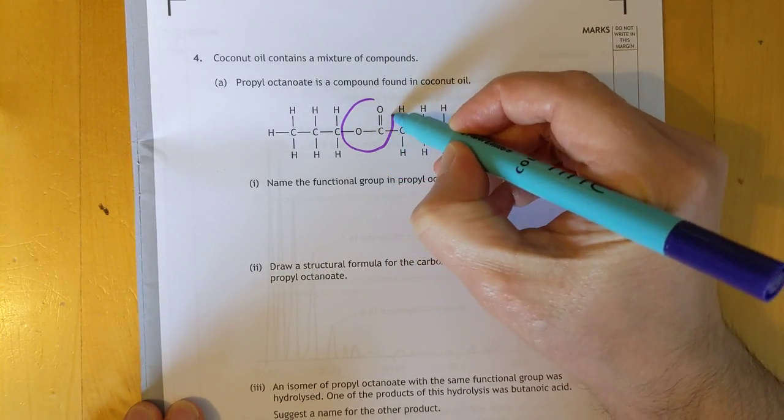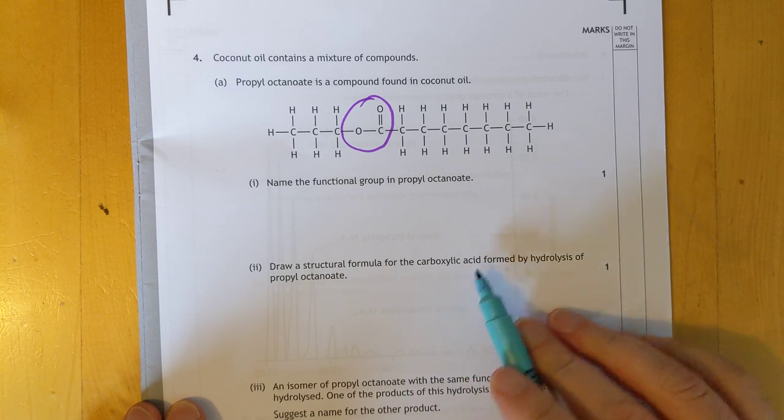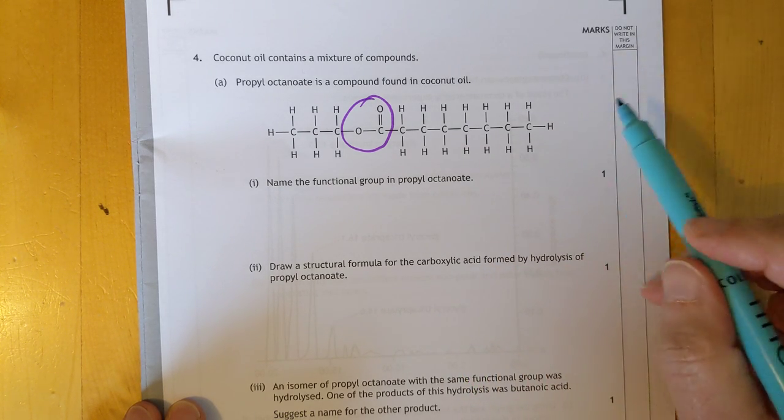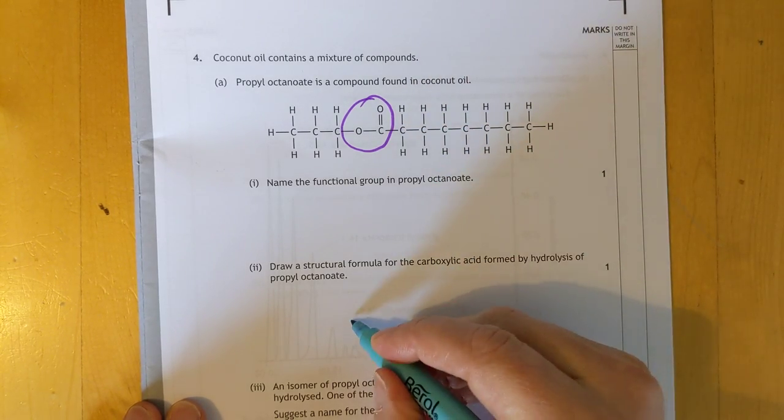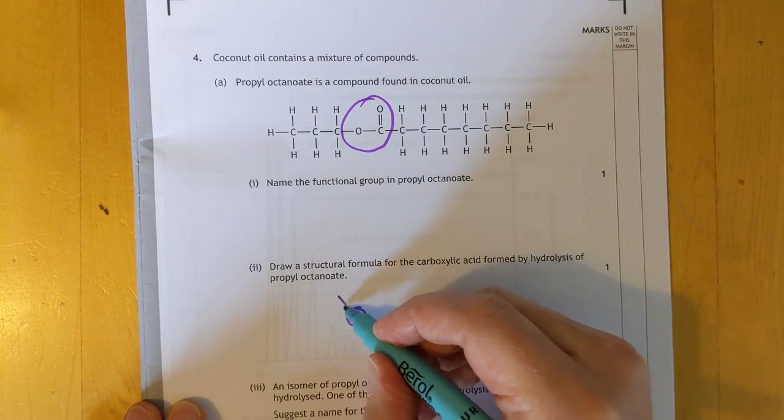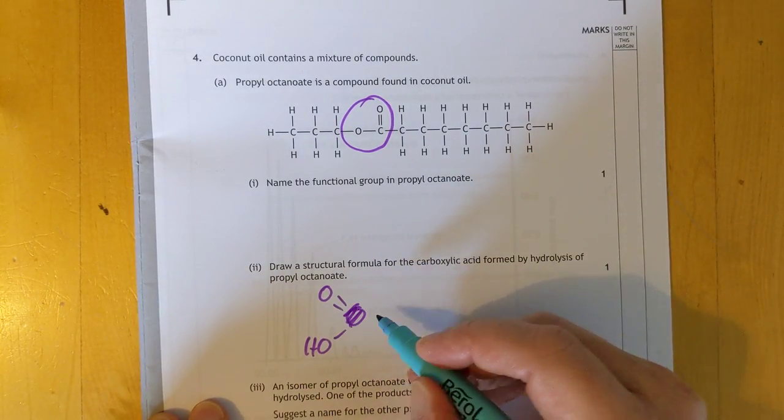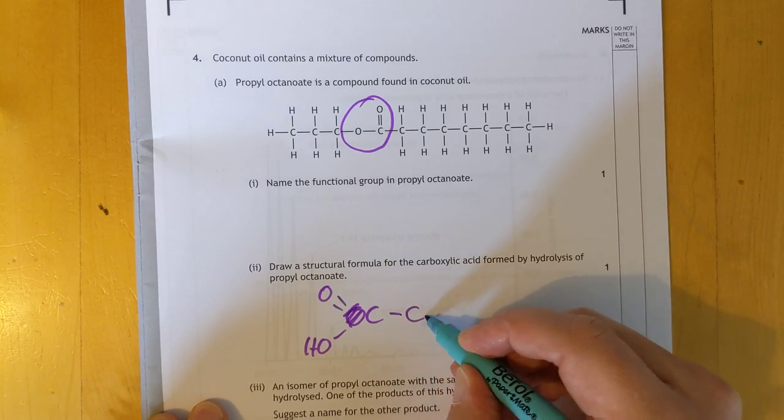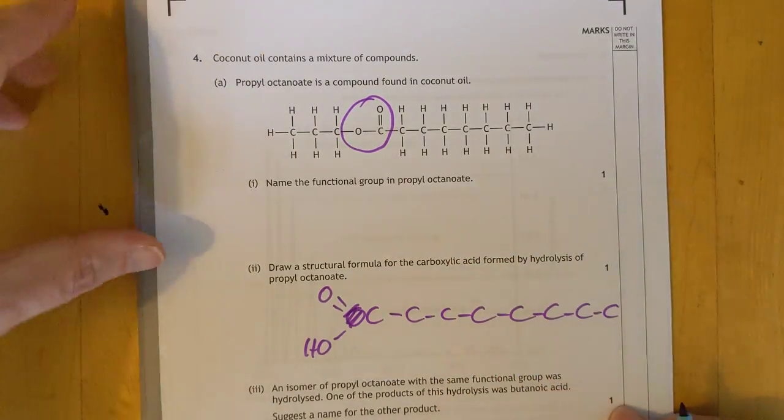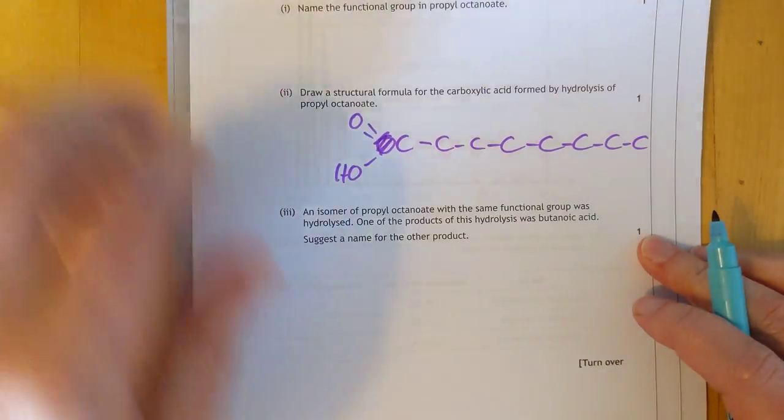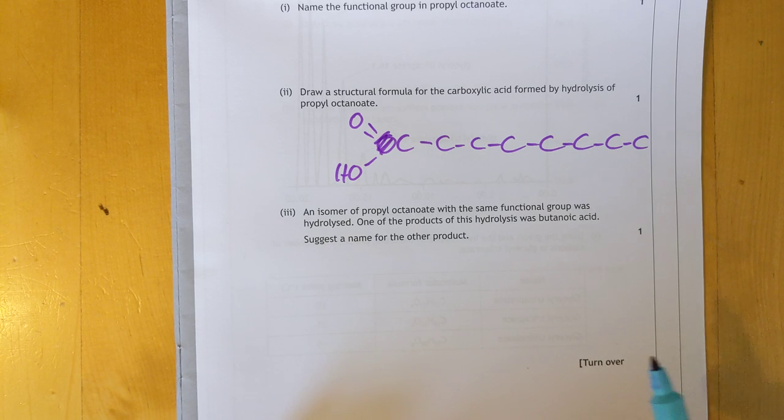Functional group. The carboxylate group. Structural formula for the carboxylic acid formed by hydrolyzing this. Just one mark. One, two, three, four, five, six, seven, eight octanoic acid. But they don't want the name. They want the structure. So, let's do... One, two, three, four, five, six, seven, eight. And because I've got my degree in chemistry, it says on the bottom of my degree that I don't need to draw the hydrogens anymore. But you do, because you don't have your degree yet.